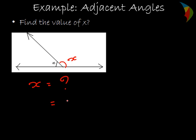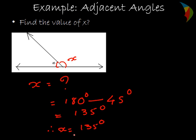x equals 180 degrees. This is 180 degrees minus 45 degrees. This is 45 degrees. That is equal to 135 degrees. Therefore, x equals 135 degrees.